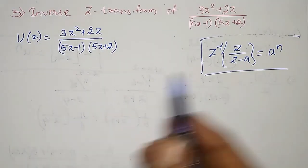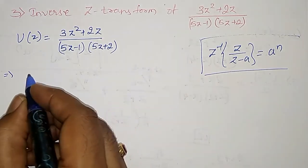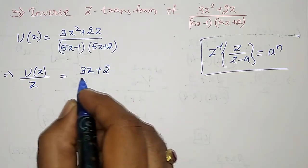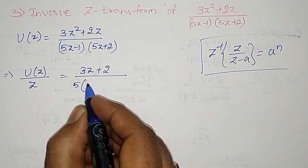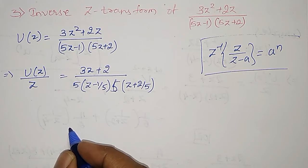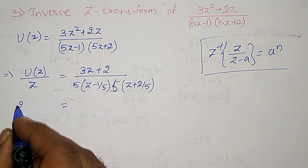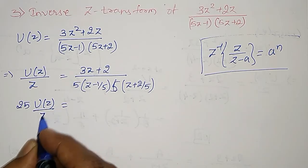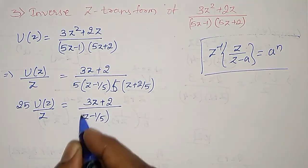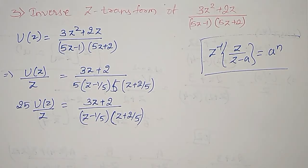To convert into standard form and get Z in the numerator, let me divide throughout by Z. This gives U(Z)/Z equal to (3Z + 2) divided by — taking 5 common from the first factor gives (Z minus 1/5), and 5 common from the second gives (Z plus 2/5). So 5 times 5 equals 25, giving 25·U(Z)/Z equal to (3Z + 2) divided by (Z minus 1/5) into (Z plus 2/5). This form makes partial fractions and conversion to standard form easier.